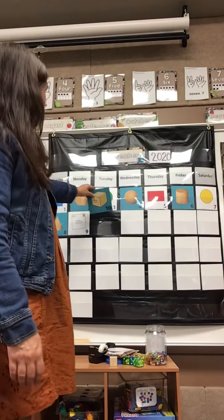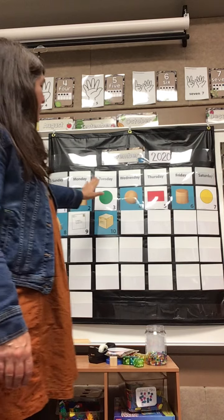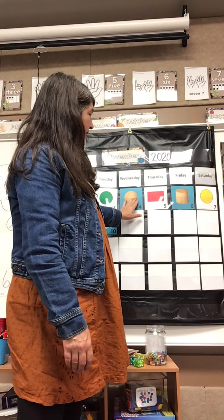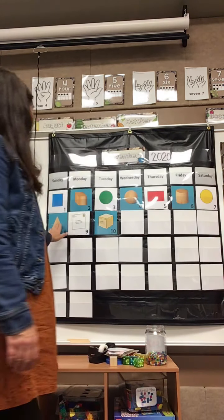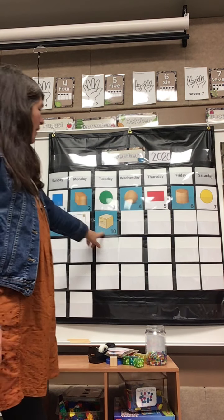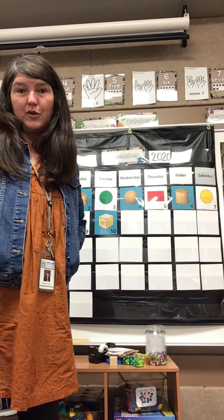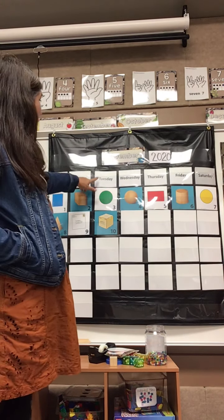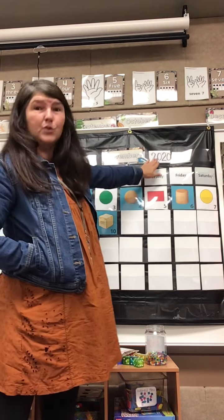So the cube is a 3D shape. I think what we have is a pattern that goes: square, cube, circle, sphere, rectangle, cylinder, circle, cone. So my prediction is that tomorrow we will have something shaped like a circle from the real world. Today is Tuesday, November 10th, 2020.